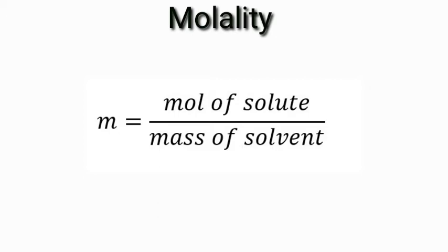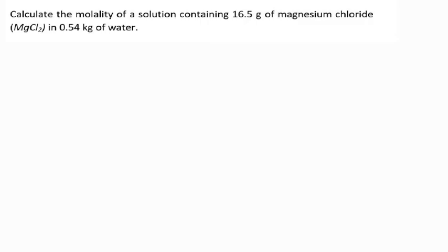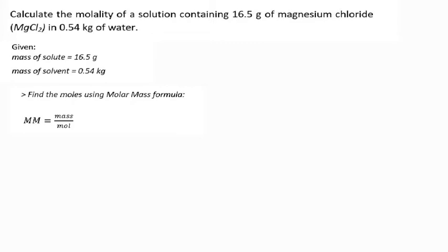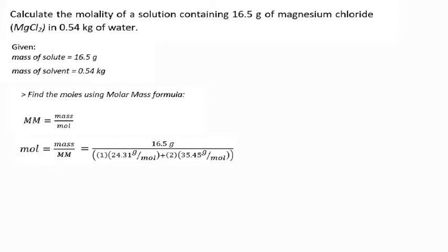Here's an example: calculate the molality of a solution containing 16.5 grams of magnesium chloride in 0.54 kilograms of water. The given are the mass of solute, which is 16.5 grams, and the mass of solvent, which is 0.54 kilograms. In order to calculate the molality we need to get the value of moles first, so we derive the formula of molar mass: mole is equal to mass over molar mass. So mole equals 16.5 grams divided by the molar mass of magnesium chloride.